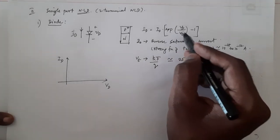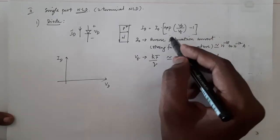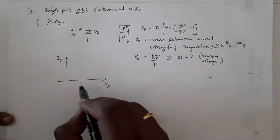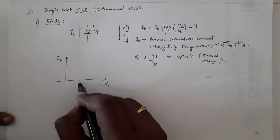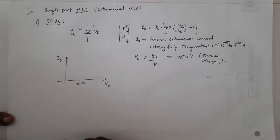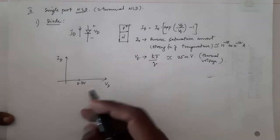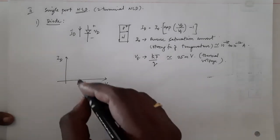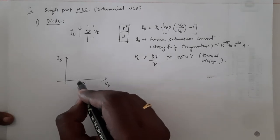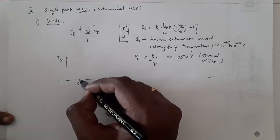Coming back to the graph: starting from zero, as VD increases, you get essentially no response until you approach the cut-in voltage. For a silicon diode, this is around 0.65 to 0.7 volts. Beyond this cut-in voltage, the current starts to increase exponentially, and below it the current is very very small — it can fairly be assumed to be zero.